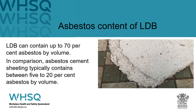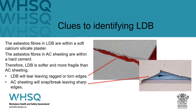LDB can contain up to 70% asbestos fibres by volume, while asbestos cement sheeting typically contains between 5 to 20% asbestos. The asbestos fibres in LDB are within a soft calcium silicate plaster, whereas in AC sheeting they are within a hard cement. Therefore, LDB is softer and more fragile than AC sheeting — LDB will tear leaving ragged or torn edges, while AC sheeting will snap and break leaving sharp edges.